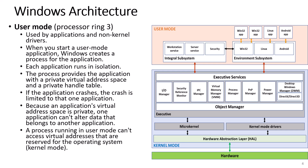User mode runs in processor ring three and is used by applications and non-kernel drivers. When you start a user mode application, Windows creates a process for the application. Each application runs in isolation. The process provides the application with a private virtual address space and a private handle table. If the application crashes, the crash is limited to that one application.